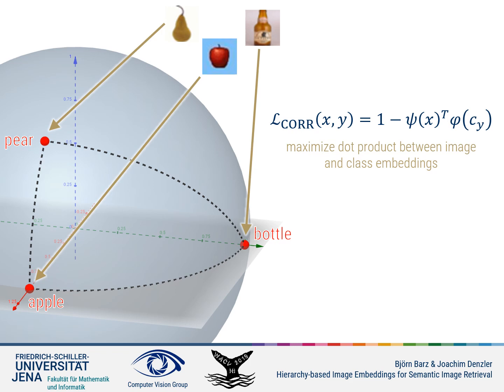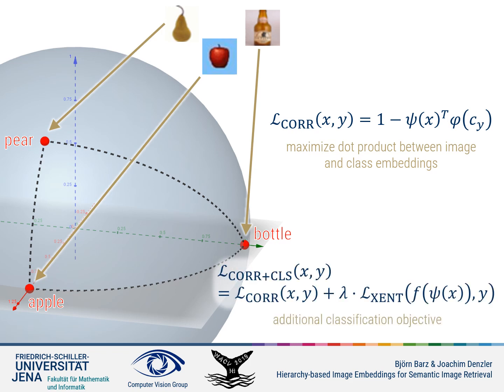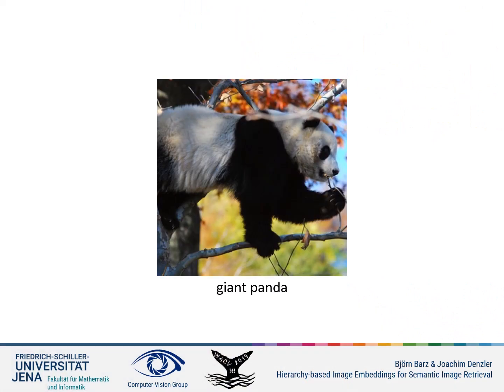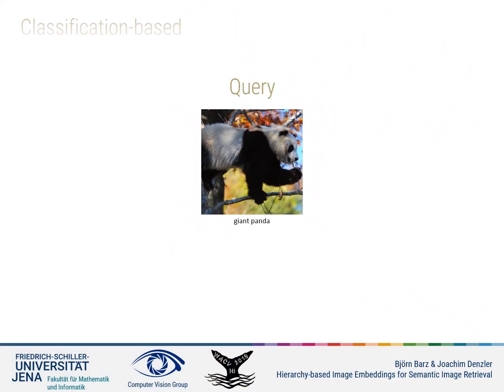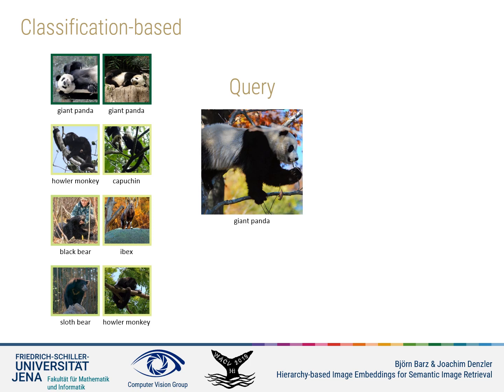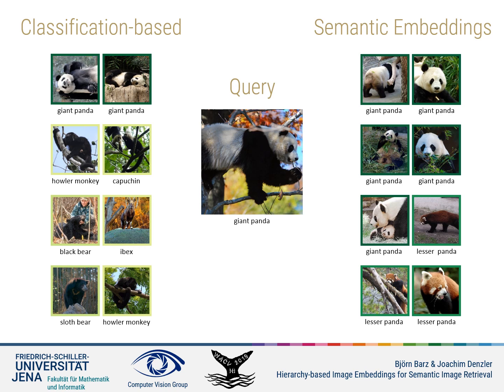If classification is relevant as well, this can be accounted for by additionally integrating a classification objective on top of the learned semantic embeddings. Returning to our panda example from the beginning: using this as a query image, content-based image retrieval based on features learned for classification will quickly return visually similar matches from other classes such as monkeys and bears. With our semantic embeddings, however, we will first retrieve all images of the giant panda and then continue with images of the lesser panda, which is the most related concept in our taxonomy.